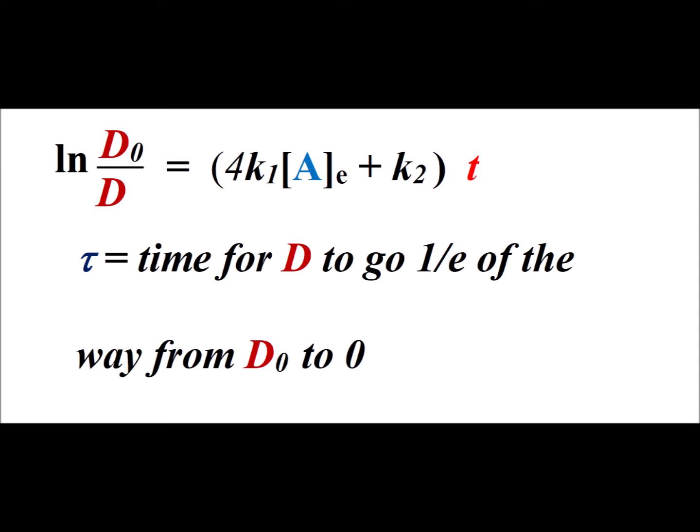So we derive this expression for the natural log of D sub zero divided by D, and then we know that tau, the relaxation time, is the time required for D to go one over e of the way from D sub zero to zero.